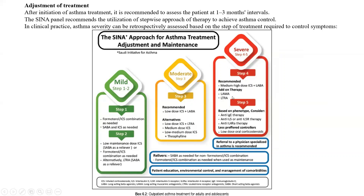One important alternative at step four is tiotropium with inhaled corticosteroids. This leads us to step five, where there is early consideration of biological therapy, because we have reached high-dose inhaled corticosteroids combined with long-acting beta agonists, leukotriene receptor antagonists, and tiotropium. Biological therapy saves the patient from frequent chronic use of oral corticosteroids, which are less preferred due to high side effects compared to monoclonal antibodies.